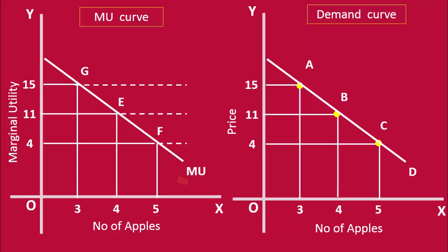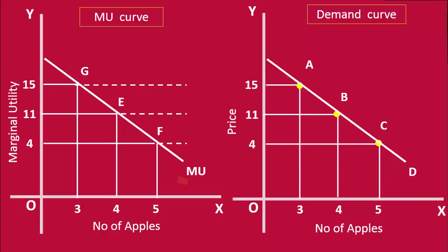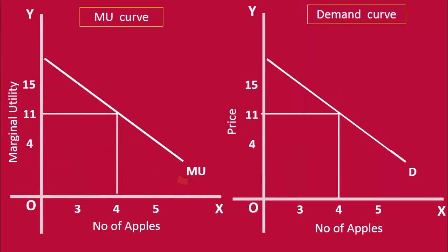It explains the consumer behavior. At a high price, the consumer buys less. At a lower price, the consumer buys more. When the price goes up, the consumer buys less and increases his marginal utility to be in equilibrium. Hence he buys less at a higher price.